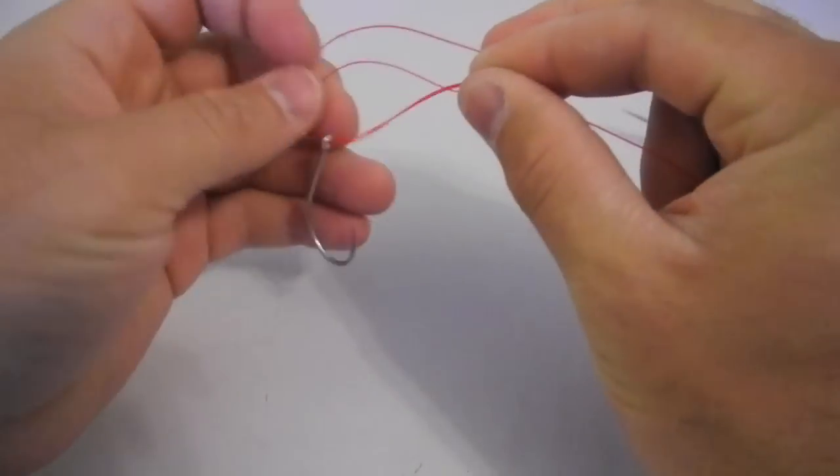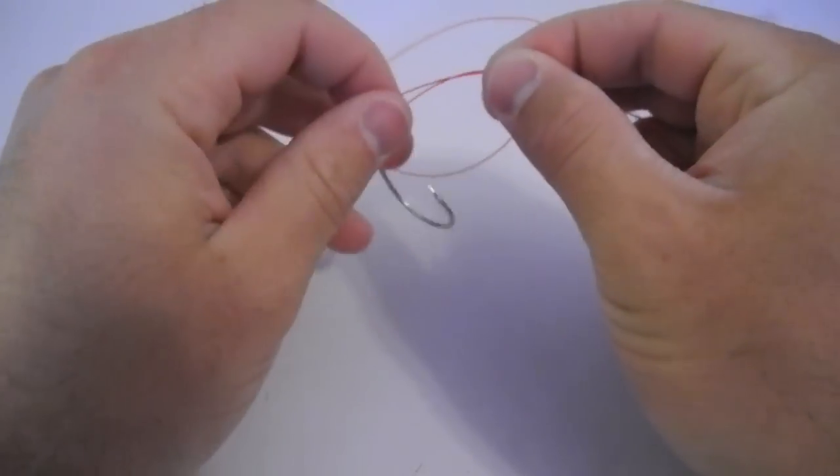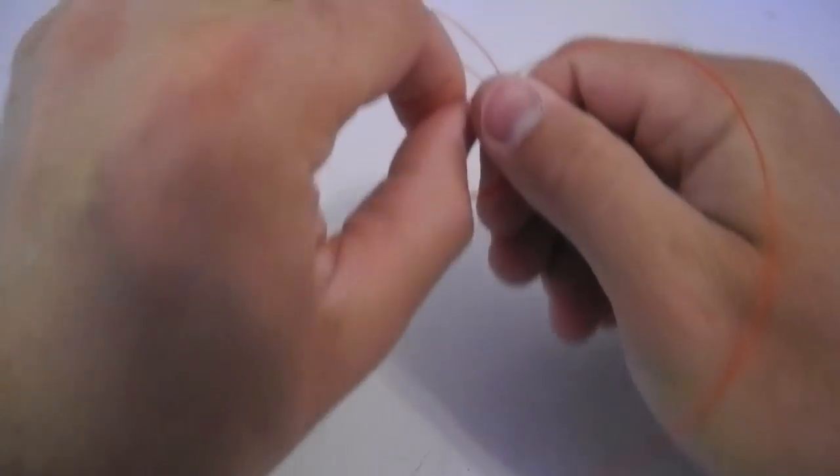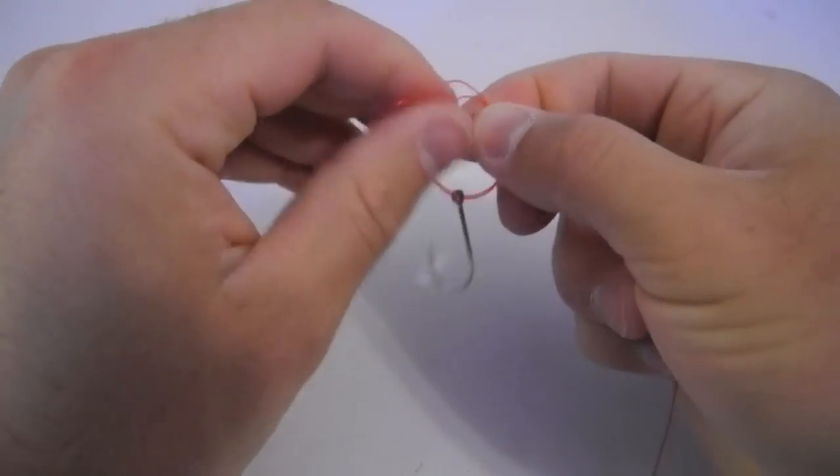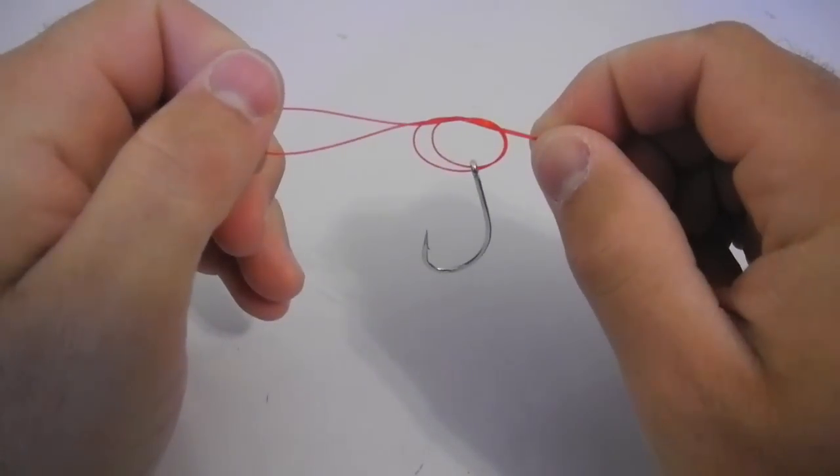Now what I'm going to do is just tie a simple overhand knot in the line. So I'm going to switch hands here, and I'm going to take this loop, and I'm just going to tie an overhand knot in the line, just like that. Pretty easy.